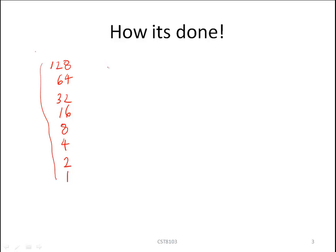Now let's say that we want, in our example here, to convert 42. I basically take the number 42 and compare it to the value of my most significant bit. Is 128 smaller than or equal to 42? The answer is no. Therefore, my most significant bit will have a value of 0. Proceeding to the next one.